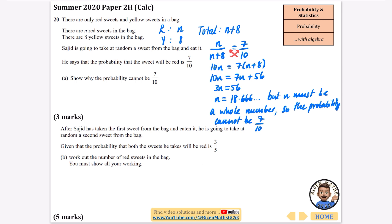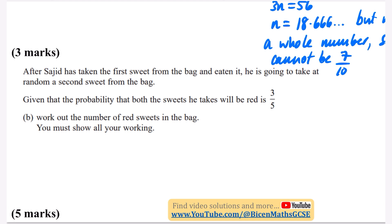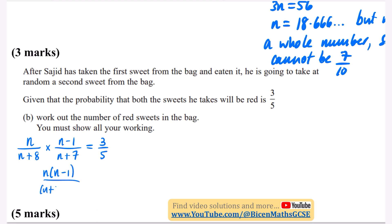Part b: Sajid eats the first sweet, then takes a second. The probability that both sweets are red is 3/5. The probability of red then red is n/(n+8) × (n−1)/(n+7) = 3/5. The combined fraction is n(n−1) over (n+8)(n+7) = 3/5.